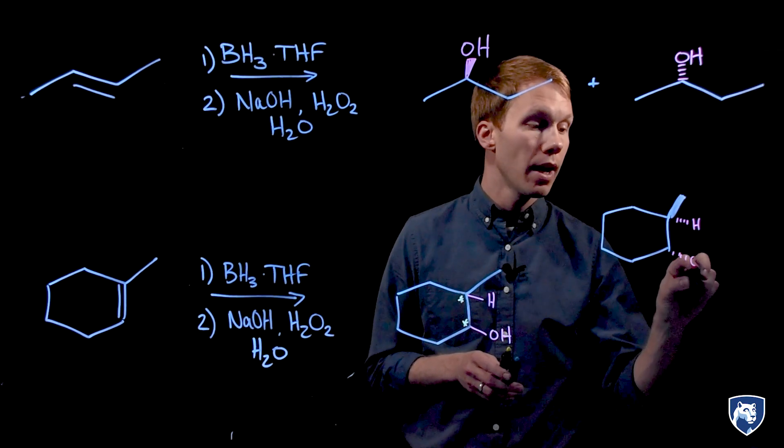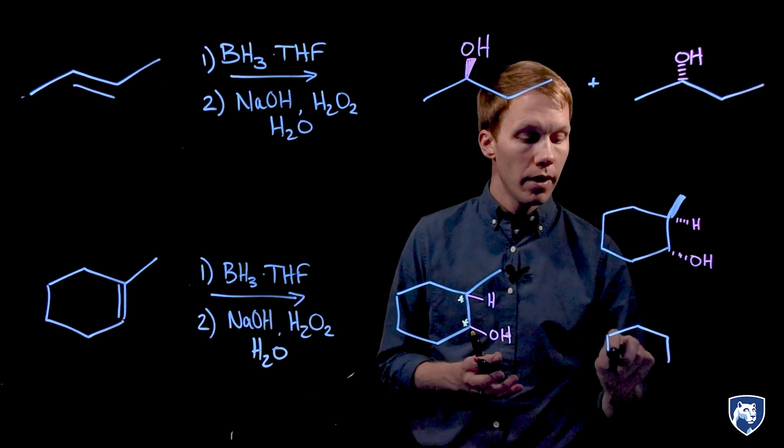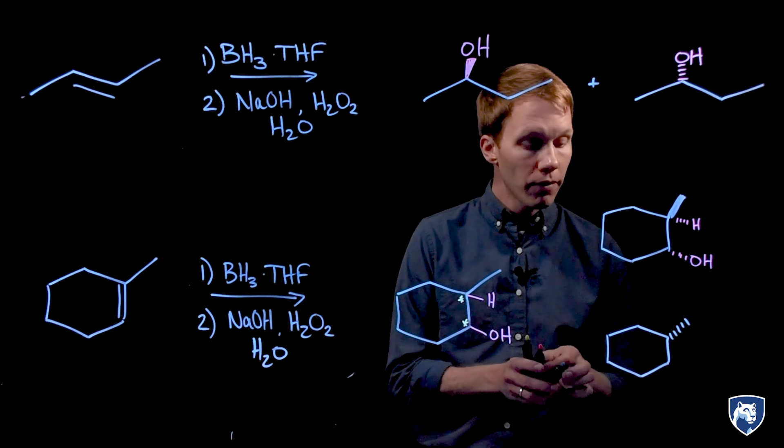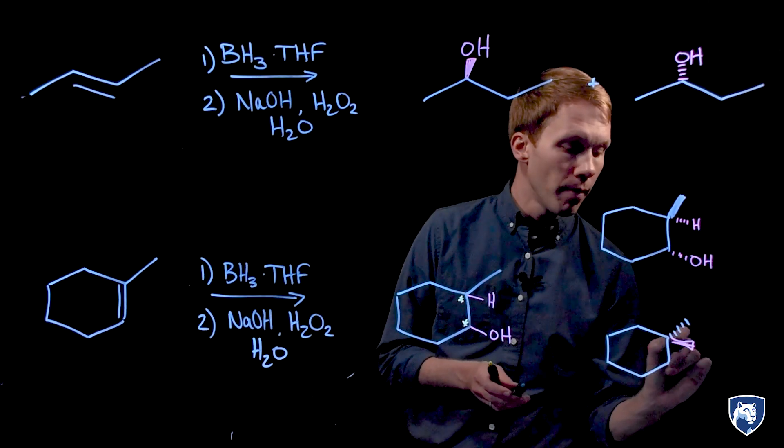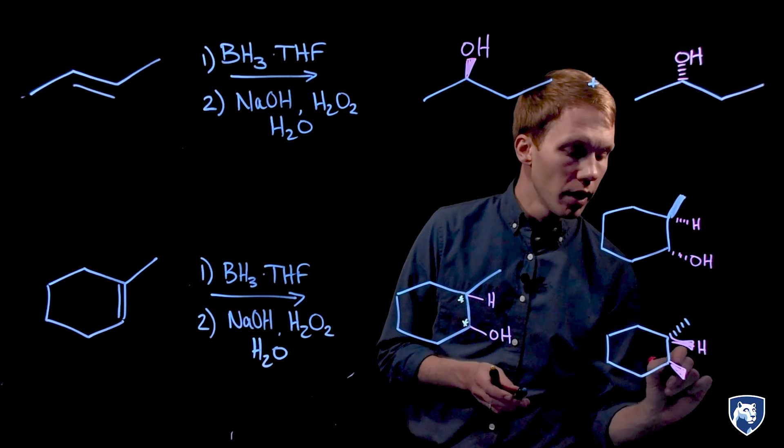They can add from behind, or they could add from the front. That alkene is planar, so adding from the front or back is equally probable. This reaction produces a racemic mixture again.